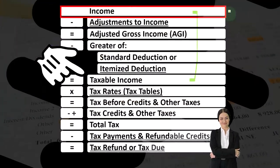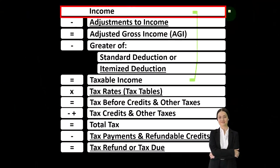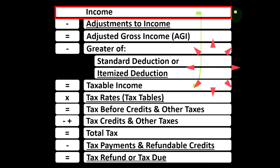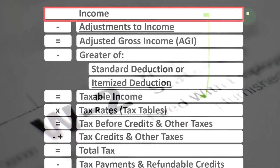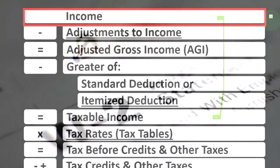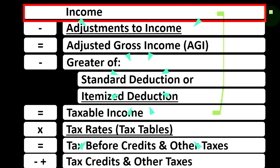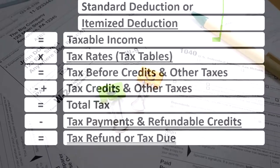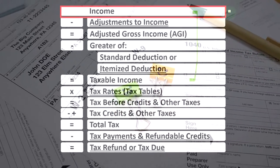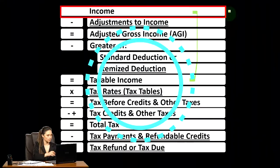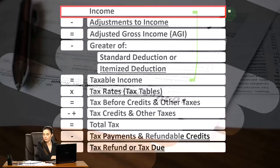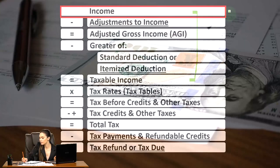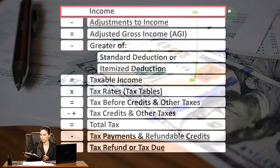On the income line, it looks pretty straightforward, and you can imagine many situations where it is straightforward. If you're just a W-2 employee, you're going to get the income reported on the Form W-2 — pretty basic. But you can imagine many scenarios where income gets a lot more gray in terms of whether something has to be included as taxable income. For example, if you found a hundred dollars on the ground, do you have to include it as taxable income subject to taxes?